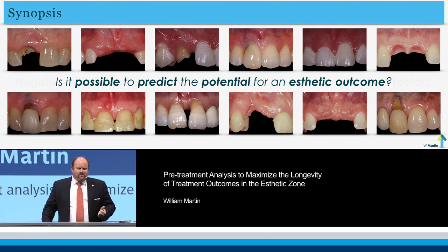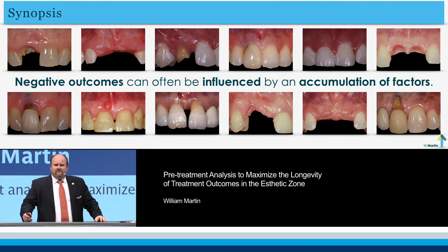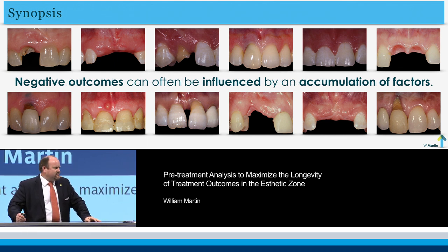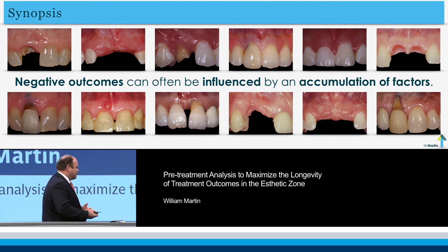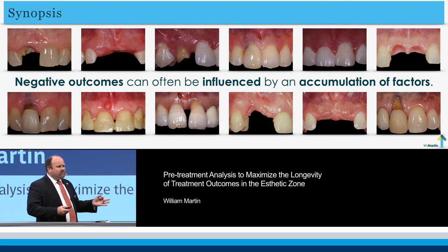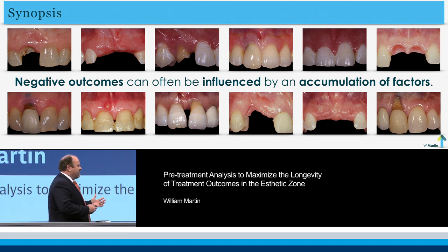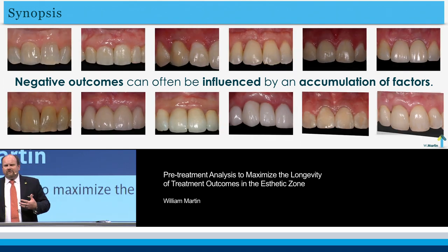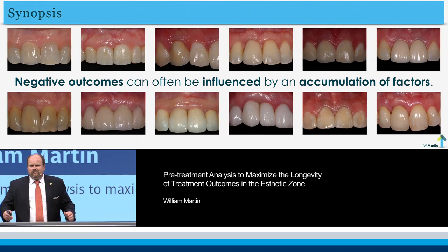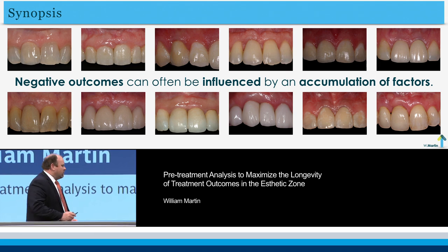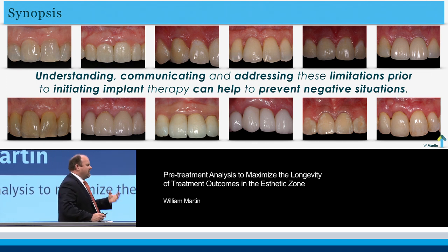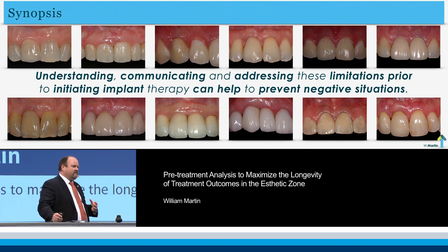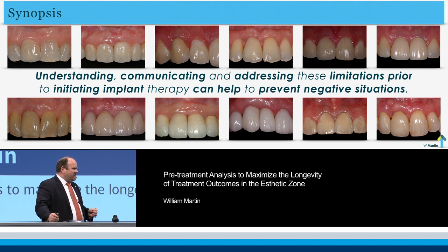Most often, especially if you've read the treatment guide on the aesthetic risk assessment, we've found that negative outcomes are usually influenced by an accumulation of factors. It's never really just one thing that gives us a compromised aesthetic outcome — it's several things that build up on themselves. So we have challenges that we're always trying to overcome to get a result that's acceptable to our patients.